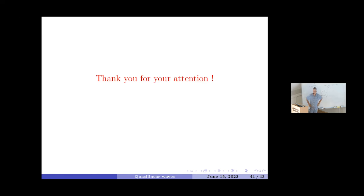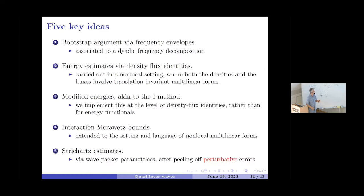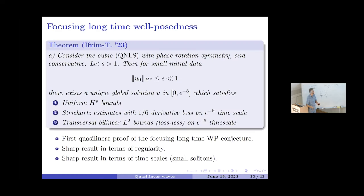Question: Where does the timescale epsilon to the minus eight come from? Response: There are two timescales — one on which you can control Strichartz and bilinear Strichartz estimates, which are sharp because of solitary waves (you can compute for solitary waves in the focusing analysis and see the scales are sharp). The epsilon to the power minus eight comes from trying to use these bounds to estimate energy growth. Our conjecture is that this is generically sharp: you might construct problems where energy actually grows and is not conserved. We don't have a proof of that, but we think it's sharp.